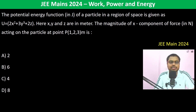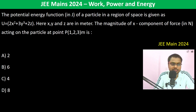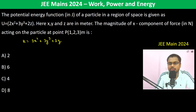The potential energy in joules of a particle in the region of space is given by U = 2x² + 3y³ + 2z. The magnitude of the x-component of the force acting...